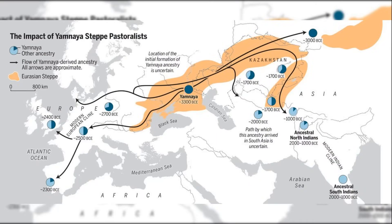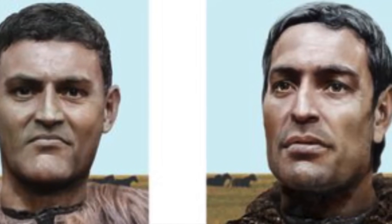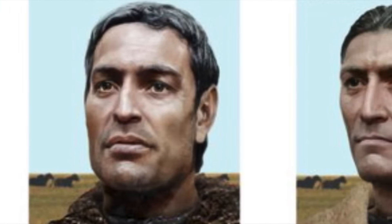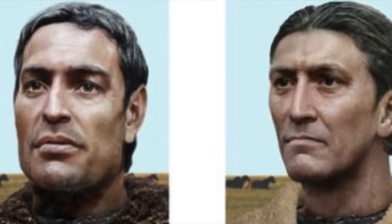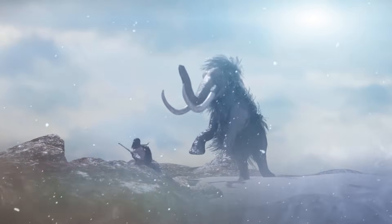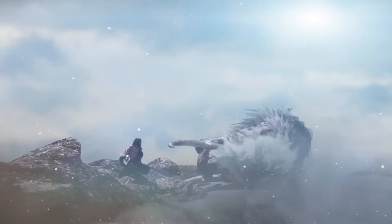In Europe, ancient North Eurasian ancestry arrived much later, primarily through the expansion of Yamnaya pastoralists from the Pontic-Caspian steppe during the Early Bronze Age, approximately 5,000 years ago. Scientists demonstrated that these steppe populations carried approximately 30 to 50% ancient North Eurasian ancestry, which they subsequently introduced into European populations. The discovery of ancient North Eurasian ancestry is yet another example of how ancient DNA can transform our understanding of human prehistory.